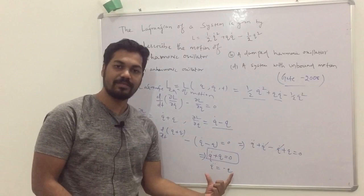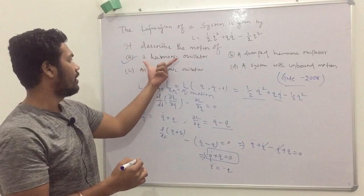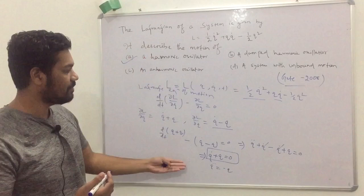Let's see the options. Option A denotes a harmonic oscillator. So option A is your correct answer.